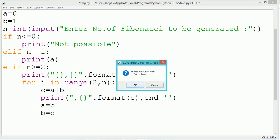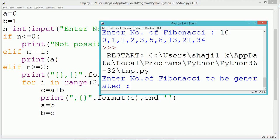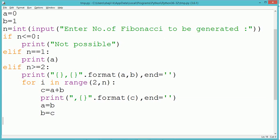Suppose we enter the value as 5, the first two Fibonacci numbers are printed which are a and b. The remaining numbers, 3 numbers have to be generated.